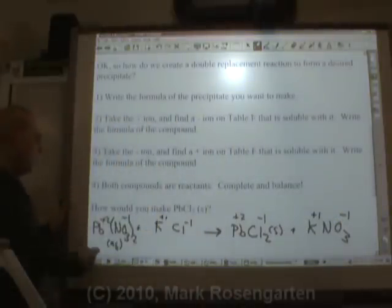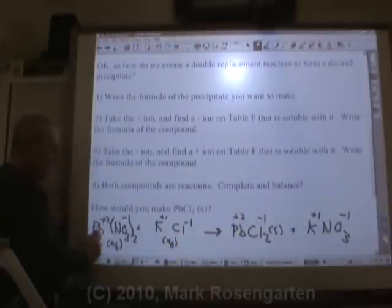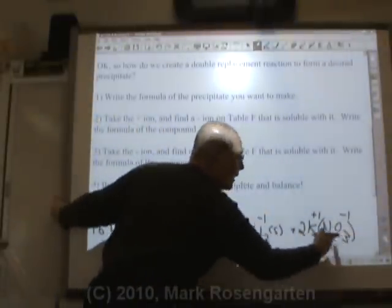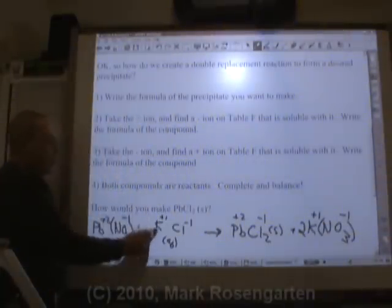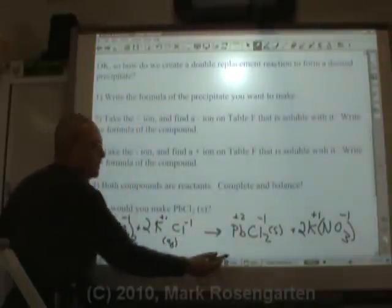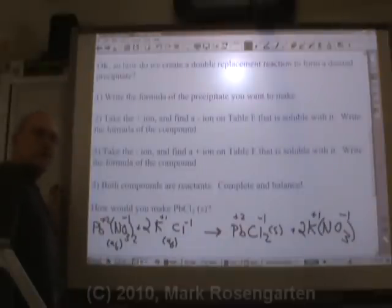Let's balance this. One lead, one lead. This is aqueous. One lead, one lead. Two nitrates, one nitrate. Let's put a two in front, because there's only one nitrate on that side. One K, two K's. We'll put a two here. Two chlorines, two chlorines. Now you're good to go. So that's how you complete and balance double replacement reactions.